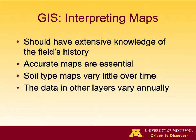When interpreting maps, extensive knowledge of the field and field history is needed, and accurate maps are always essential. Soil type maps vary very little over time; however, some other data layers vary annually, like nutrition for example.